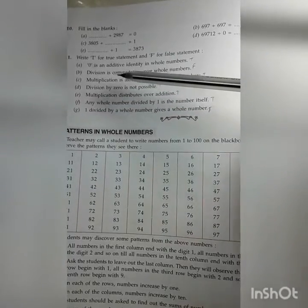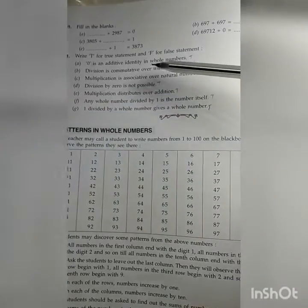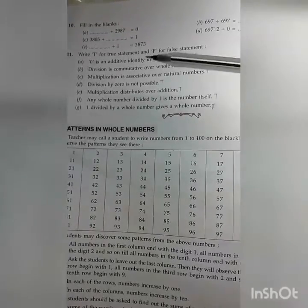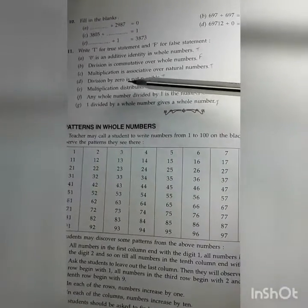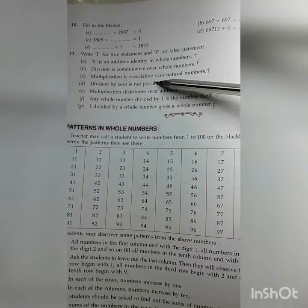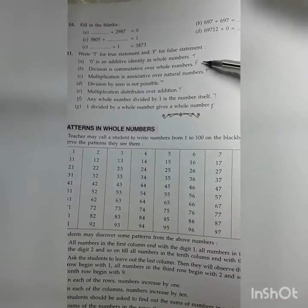Number 11 is: Write T for true statement and F for false statement. A: 0 is an additive identity in whole numbers. True. B: Division is commutative over whole numbers. Wrong.